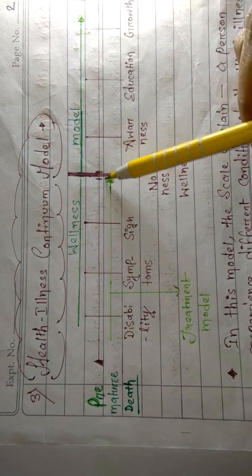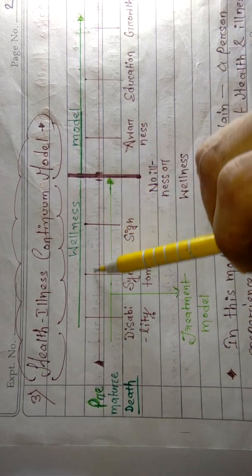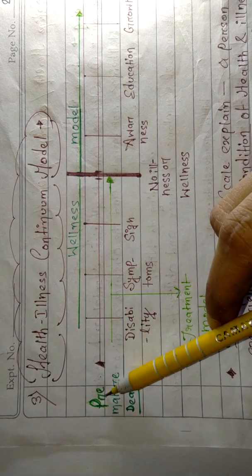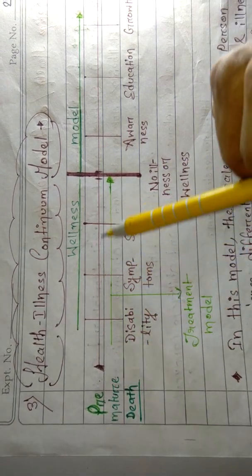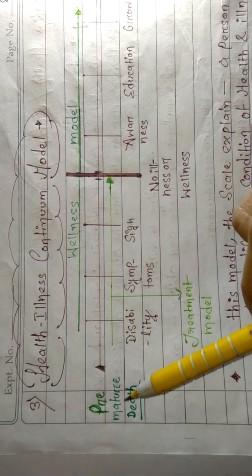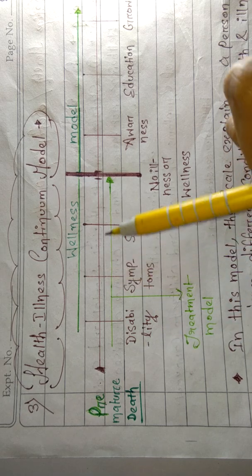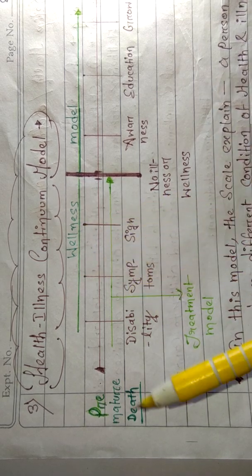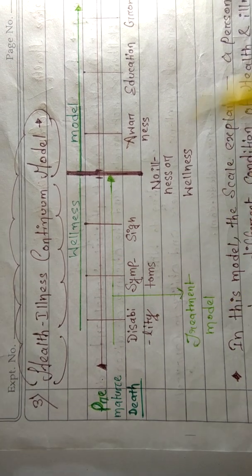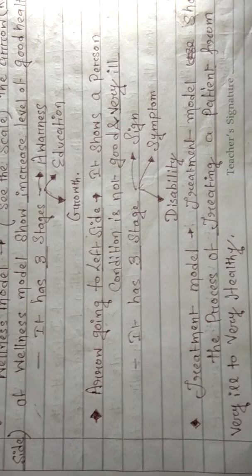The arrow going to the left side means premature death. This brown arrow going towards the left side is showing the premature death of a patient. This arrow indicates a very ill health condition or not a good health condition.